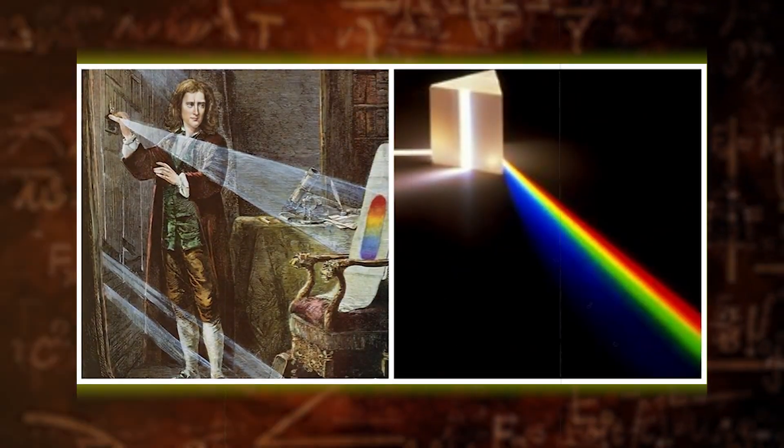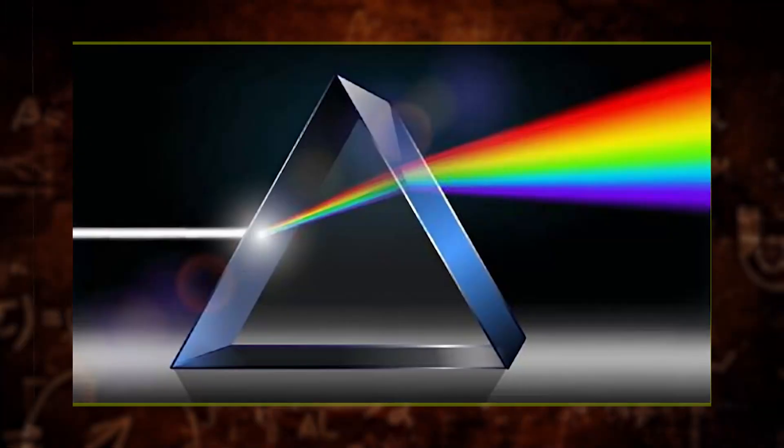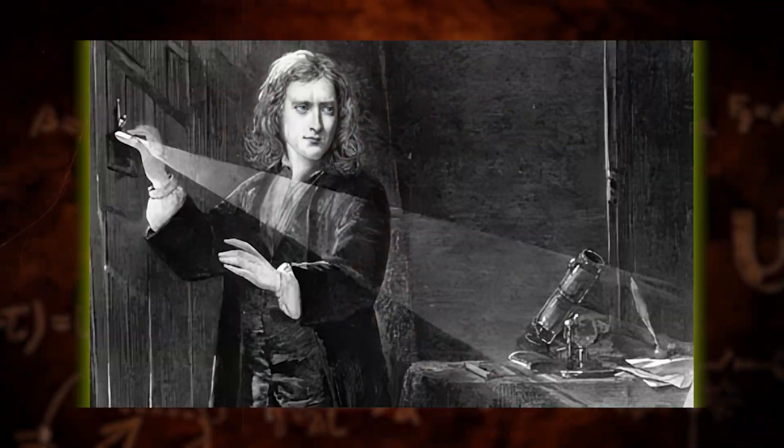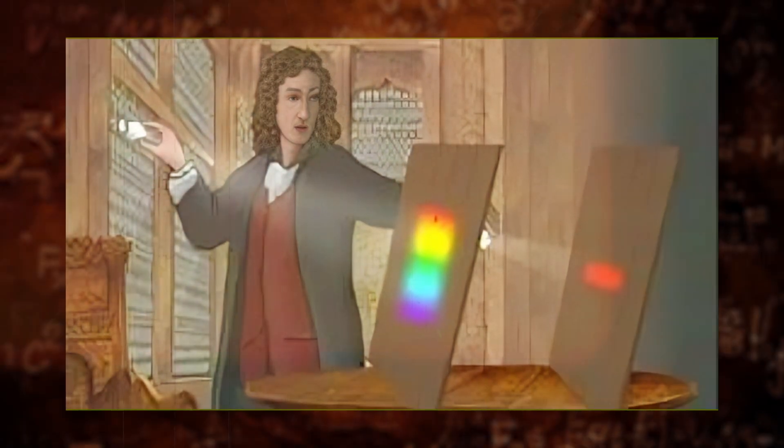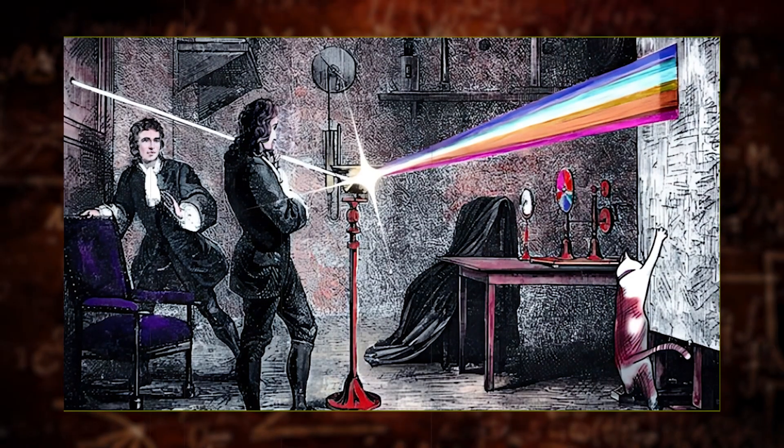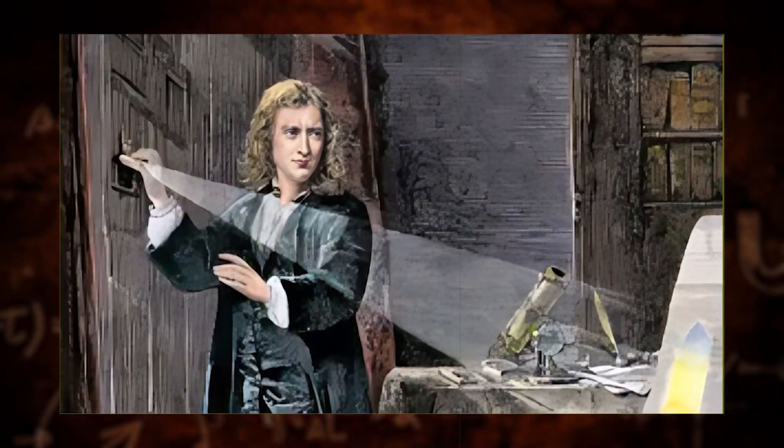Newton's experimentation with prisms revealed the spectrum of colors inherent in white light. This groundbreaking work in optics challenged preceding notions about the nature of light, paving the way for a more accurate understanding of the fundamental principles governing it. In his seminal work Optics, Newton delved into the behavior of light,